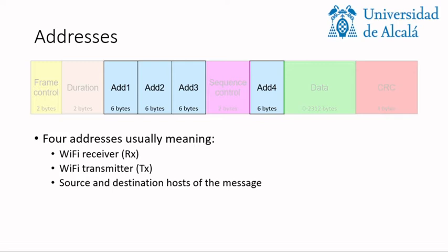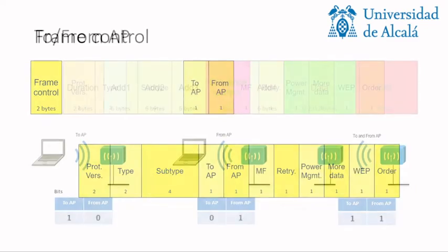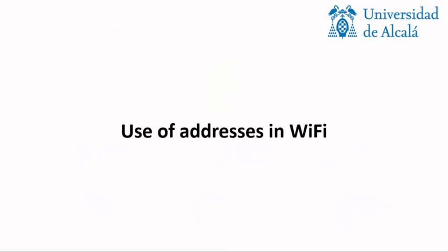Now we are going to see some specific examples. As you remember, we have two additional fields in the frame control that are also related to forwarding — the two bits indicating the to and from access point direction.